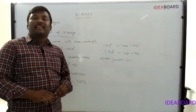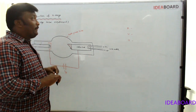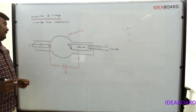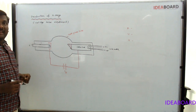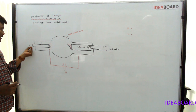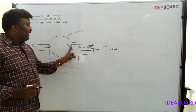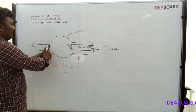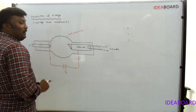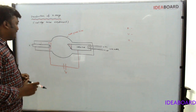Now we are discussing the production of X-rays by the Coolidge tube, because this apparatus was constructed by Coolidge. In this apparatus, we have a filament F connected to a low-tension battery. From the low-tension battery, current passes through it. There is also a target connected to a carbon rod. Between the filament and target, we apply some potential difference V. All these are placed in a hard glass tube which is always evacuated.